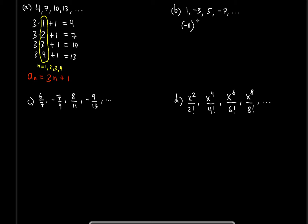The first number is positive, so we cannot have an odd power — we need an even power for negative one so that it turns into a positive. If we ignore the negatives, the differences between terms would be two all the time: 1, 3, 5, 7. So two is always at play.